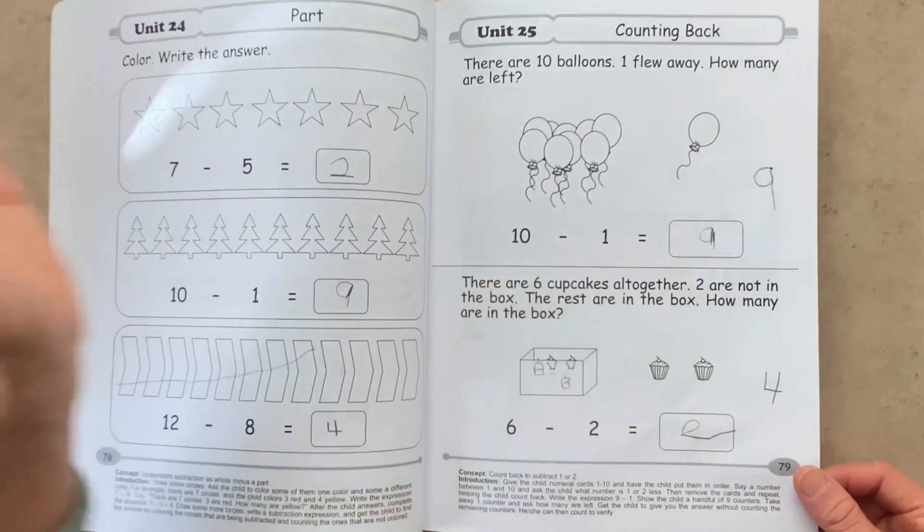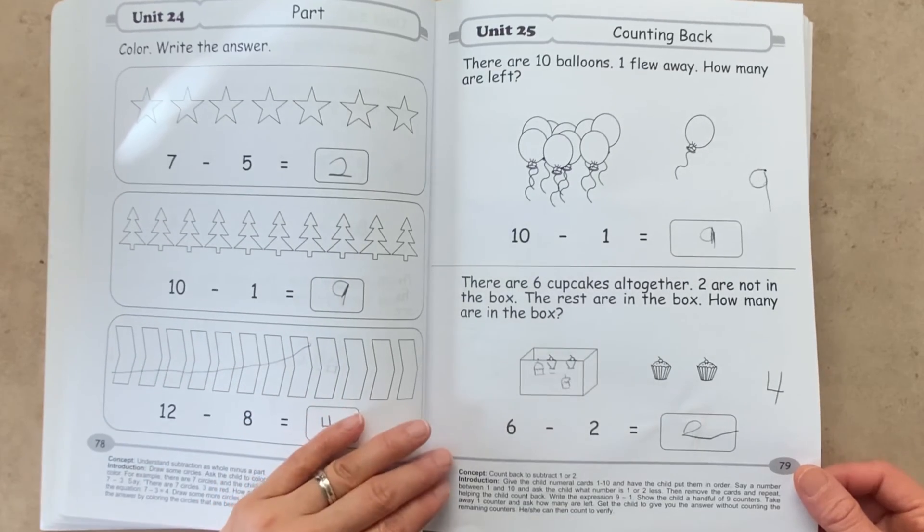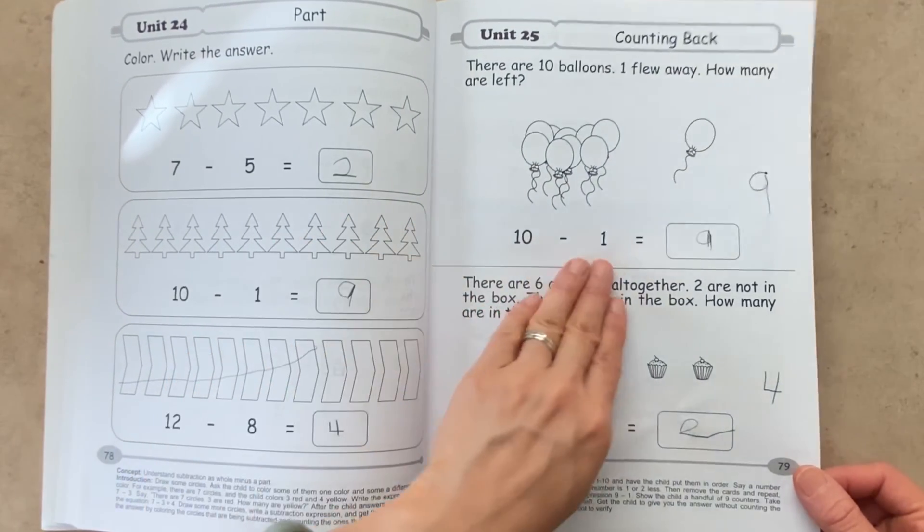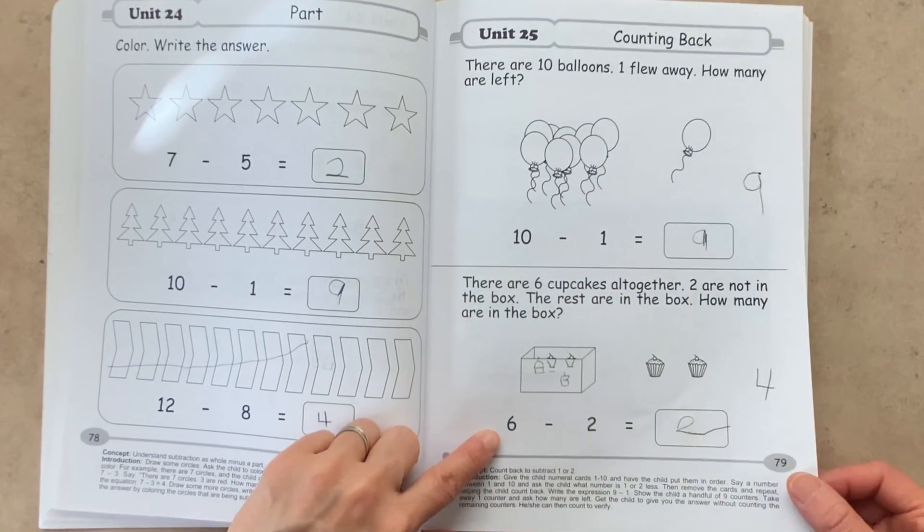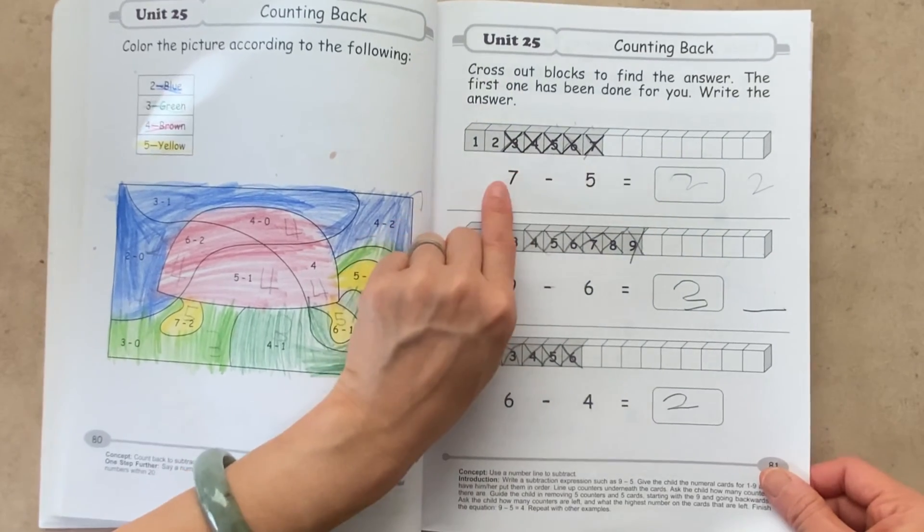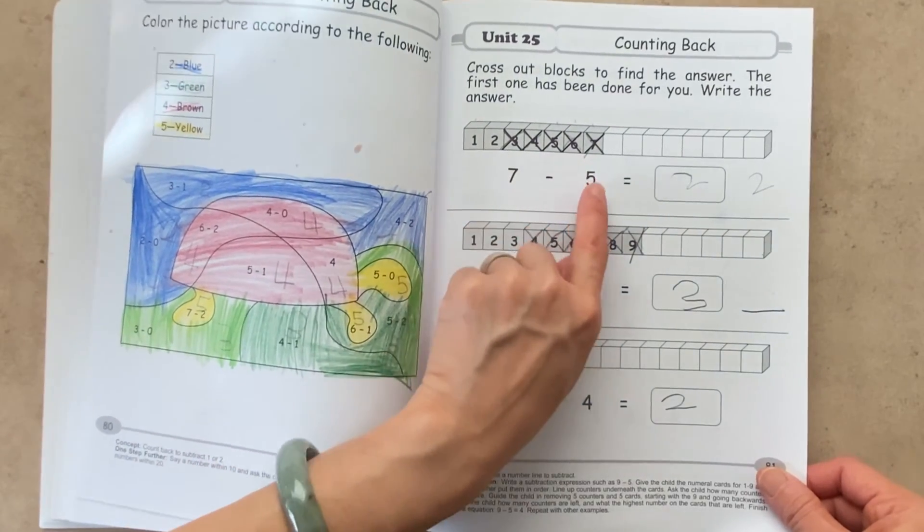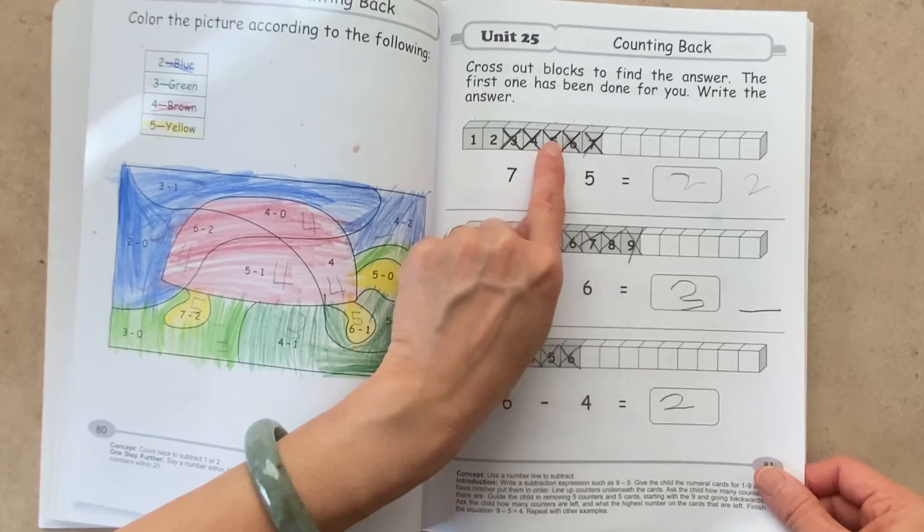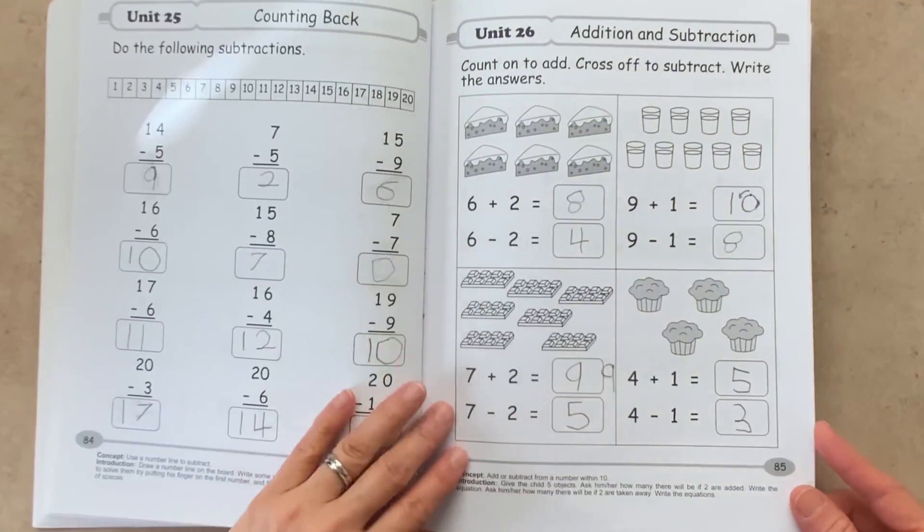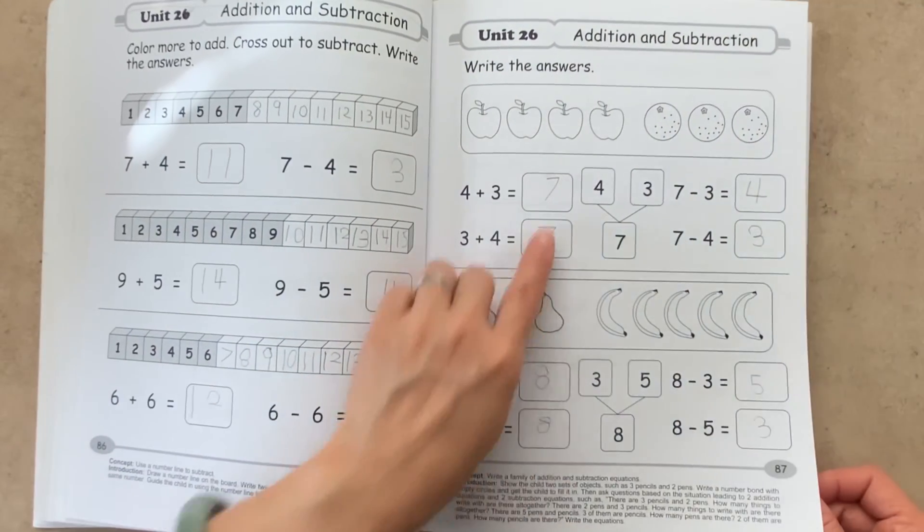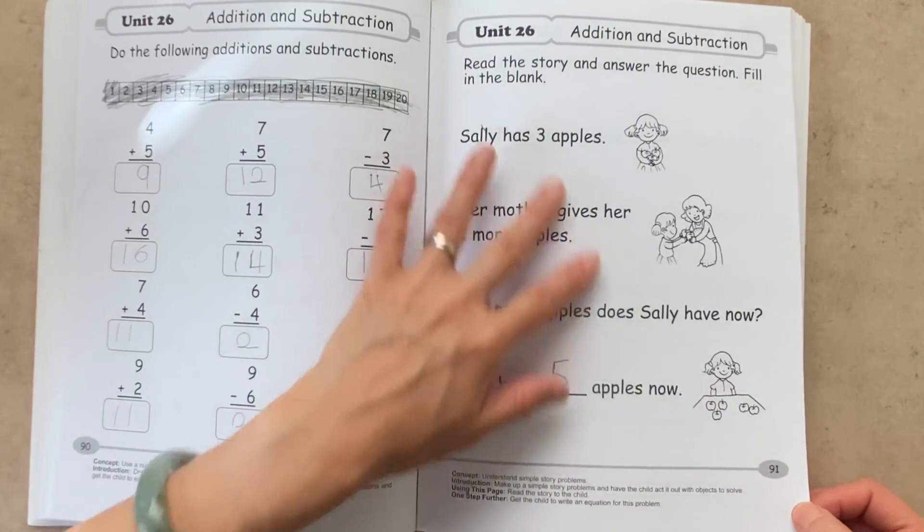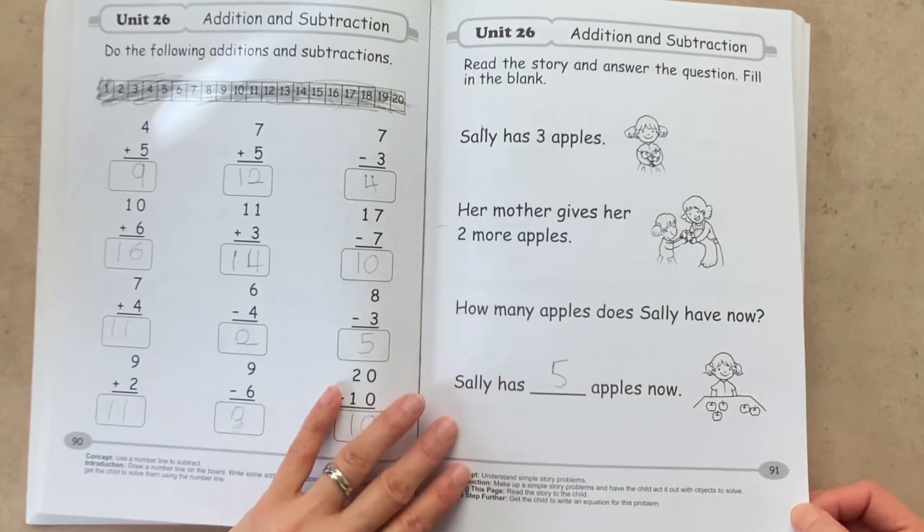Unit 24 is about part. So now we're looking at the parts opposed to the whole. And the different parts. Parts to whole. Unit 25 is counting back, which is pretty much like subtraction. So here we have 10 balloons. Take away 1, you're going to count back and get 9. And here's a good way to count back. So you have 7 and then you count back 5. 1, 2, 3, 4, 5. And you get the answer 2. And again, that concept of part to whole. Here we have some more simple word problems.